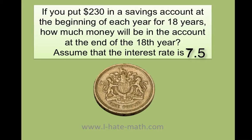If you put $230 in a saving account at the beginning of each year for 18 years, how much money would be in the account at the end of the 18th year? Assume the interest rate is 7.5%. So how do we do this problem?